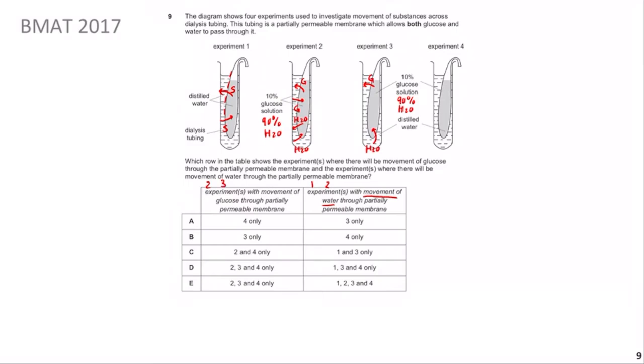Experiment 4 is simply Experiment 3 in reverse - drawing a diagram would waste valuable time in the BMAT, and saving even a few seconds can change your score. What was outside the tube is now inside, and vice versa. Rather than glucose moving out, it moves in; rather than water moving in, it moves out. So Experiment 4 also belongs to both categories. The answer is E. A key point: always notice whether the question asks for net movement or just movement.